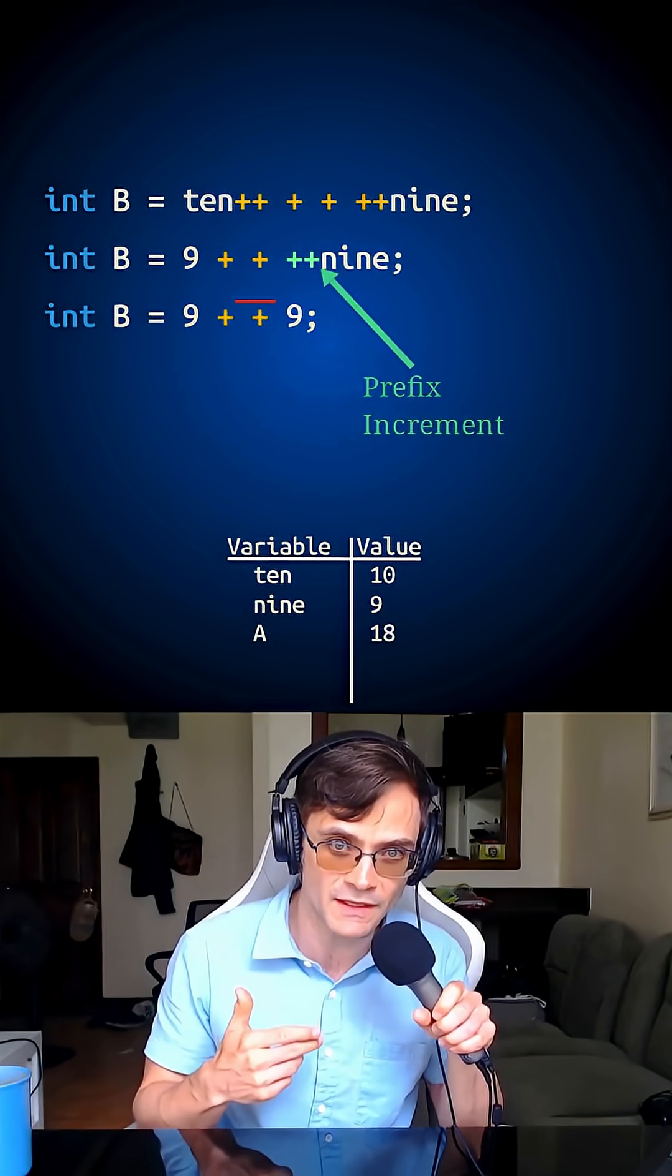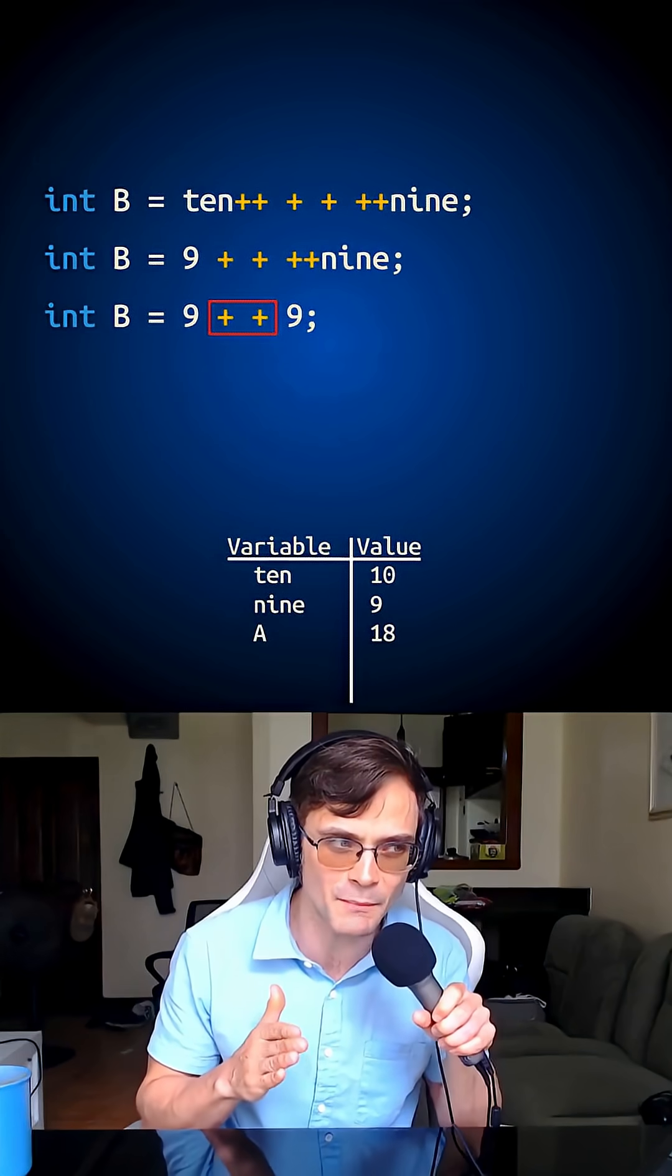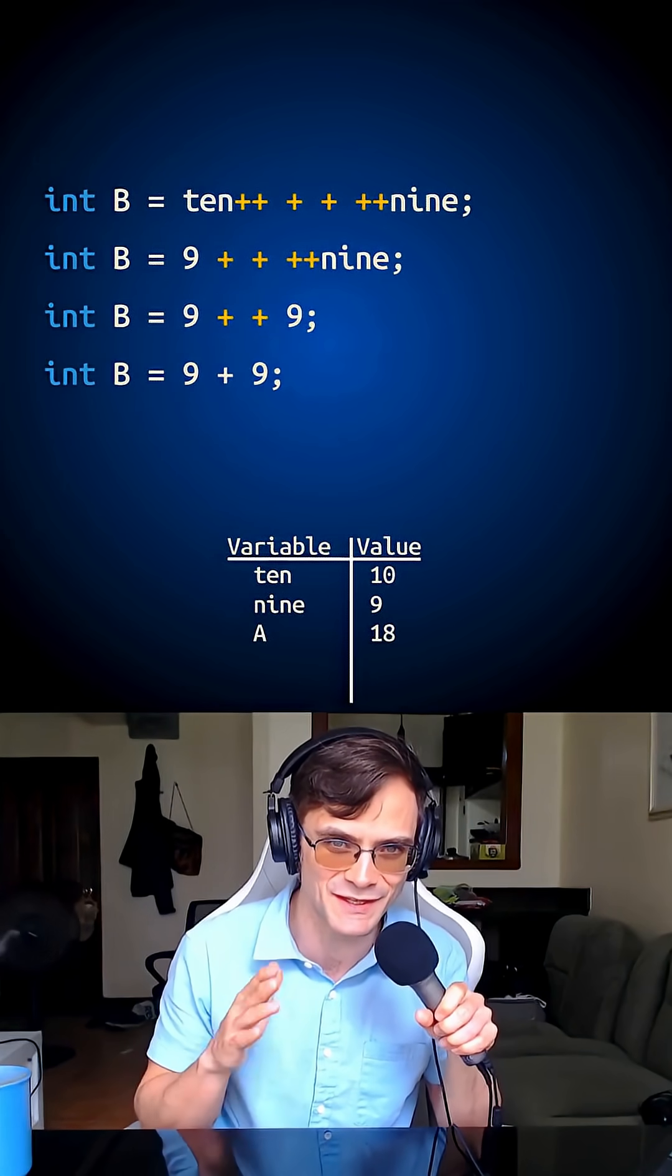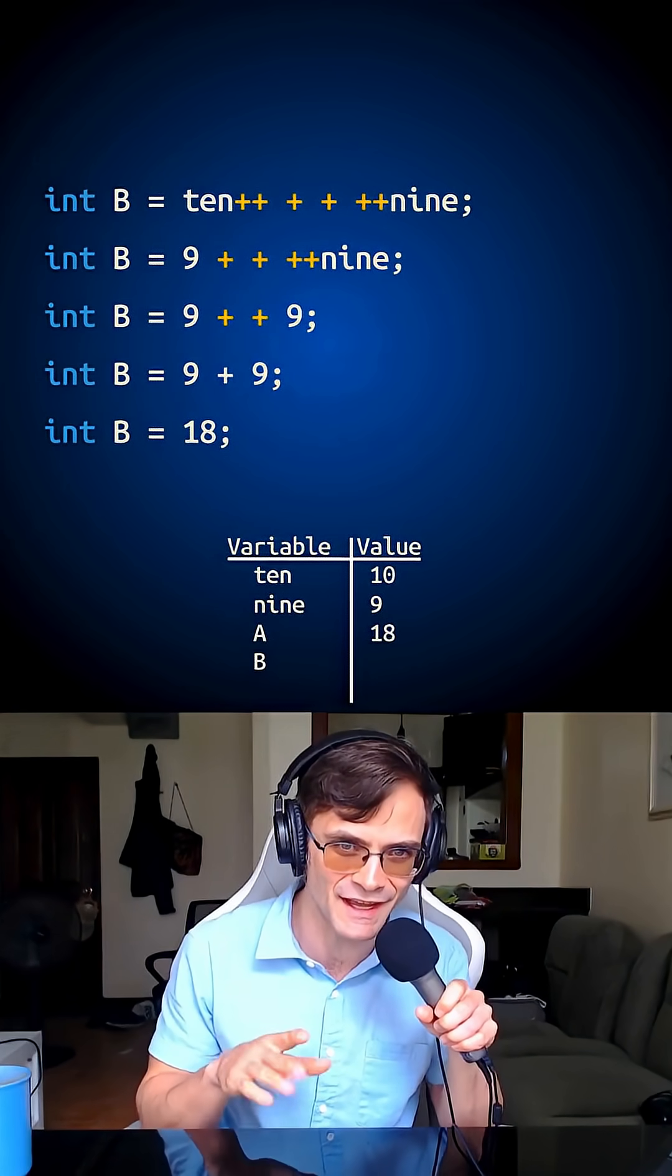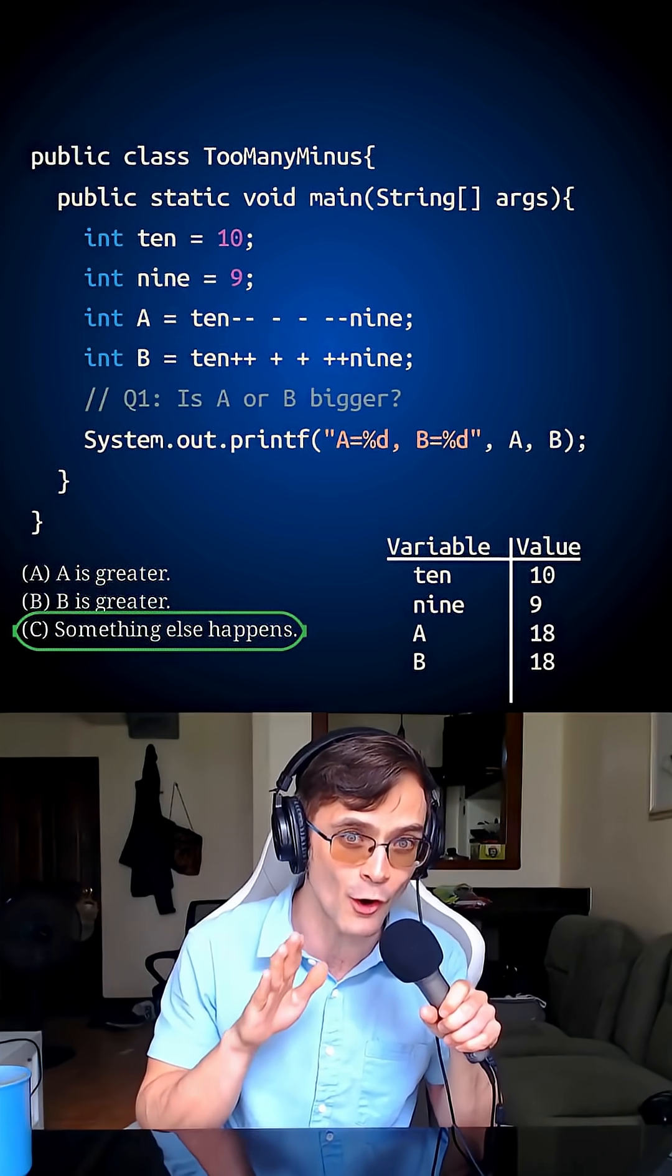So I'm doing 9 plus the positive of 9. Plus the positive is the same as just adding. So it's just 9 plus 9, it's 18. It turns out that A and B are equal. And now this is equal.